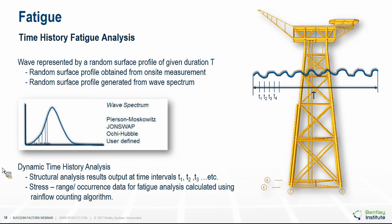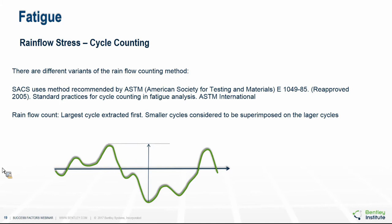Once results are available at these time intervals, the rainflow counting algorithm is used to reduce the varying stresses calculated at each time point into a set of stress ranges and number of cycles to calculate damage at any location. A question was raised about the duration of the time history — three to four hours is typical for an offshore structure. For wind turbines, ten minutes may be used with up to 3,000 to 5,000 time histories.